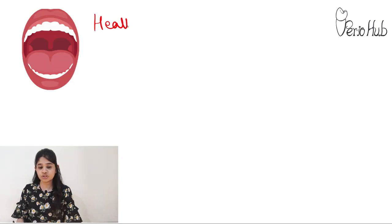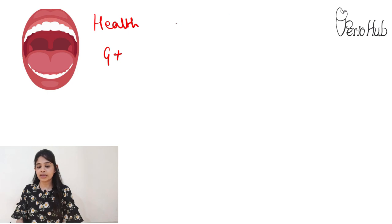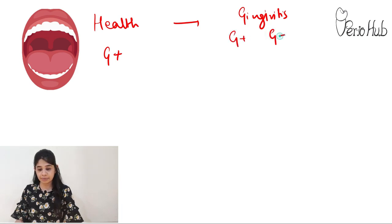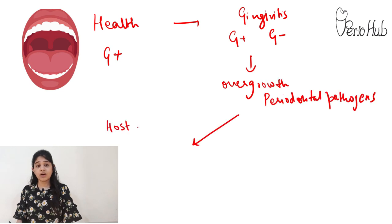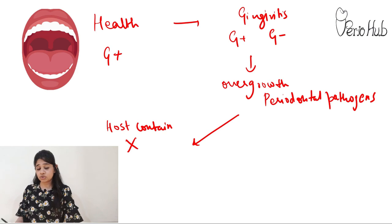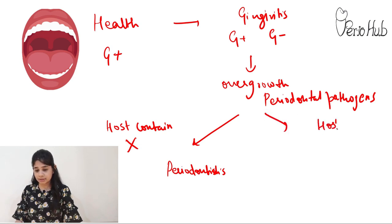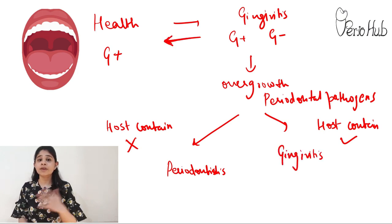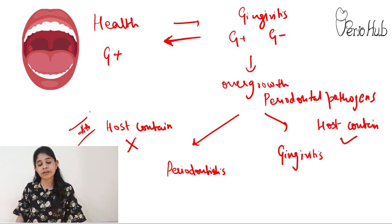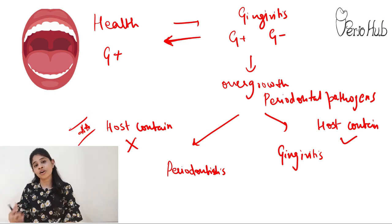To summarize: in health, the oral cavity is predominantly associated with gram-positive cocci and filaments. In gingivitis, there is a shift in the microflora with equal proportions of gram-positive and gram-negative bacteria. After this stage, there can be an overgrowth of periodontal pathogens. If the host is not able to contain the disease, it leads to destruction of the supporting structures and periodontitis. If the host can contain the disease, it remains at a gingivitis state. Host factors are critical in determining whether periodontal disease will occur or not.